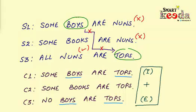And hence, we can deduct the middle term. And the conclusion we get here is some books are tops, which we can find in conclusion 2.